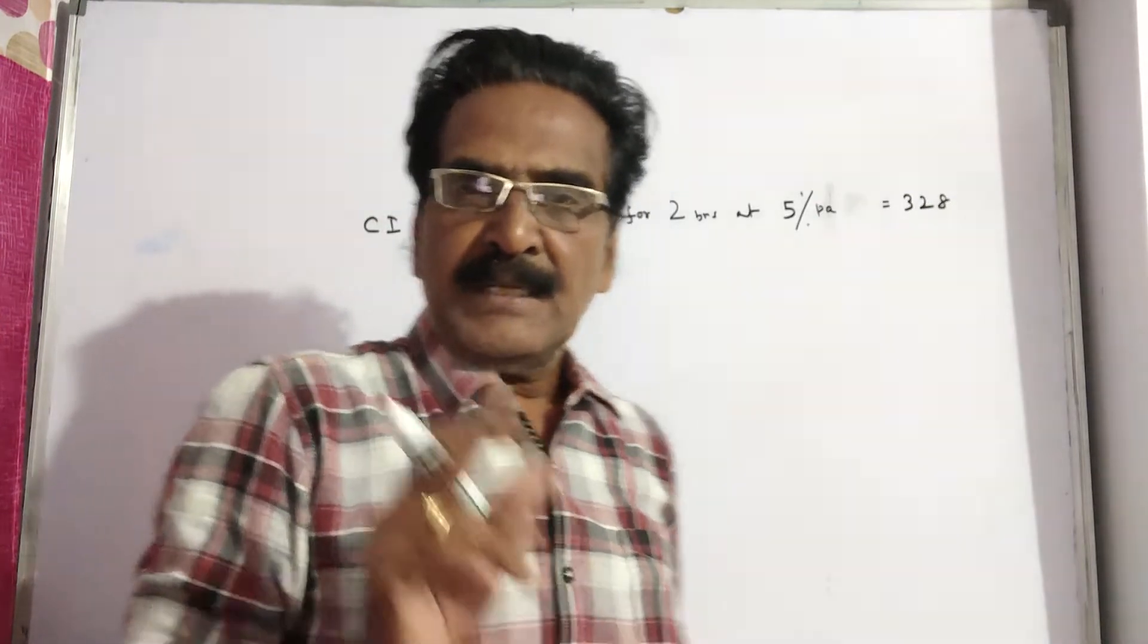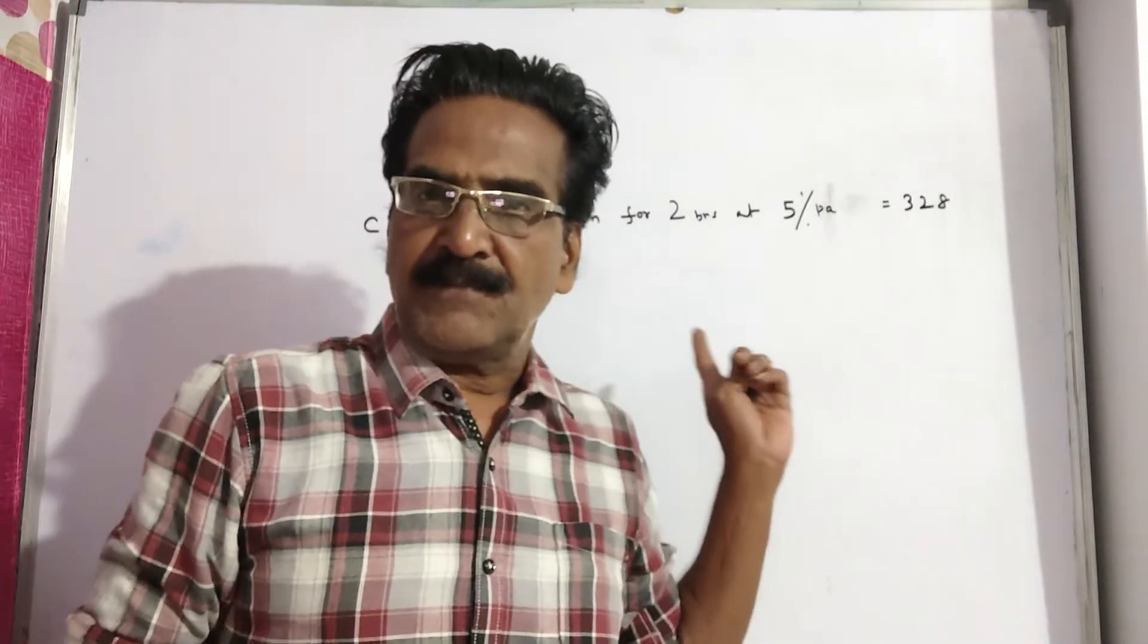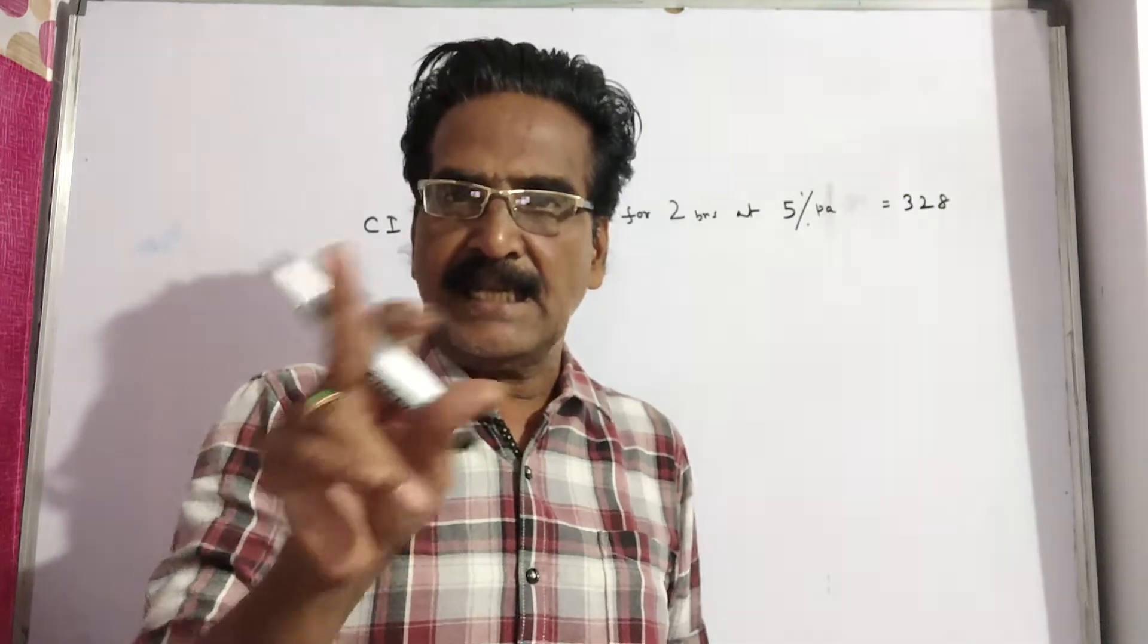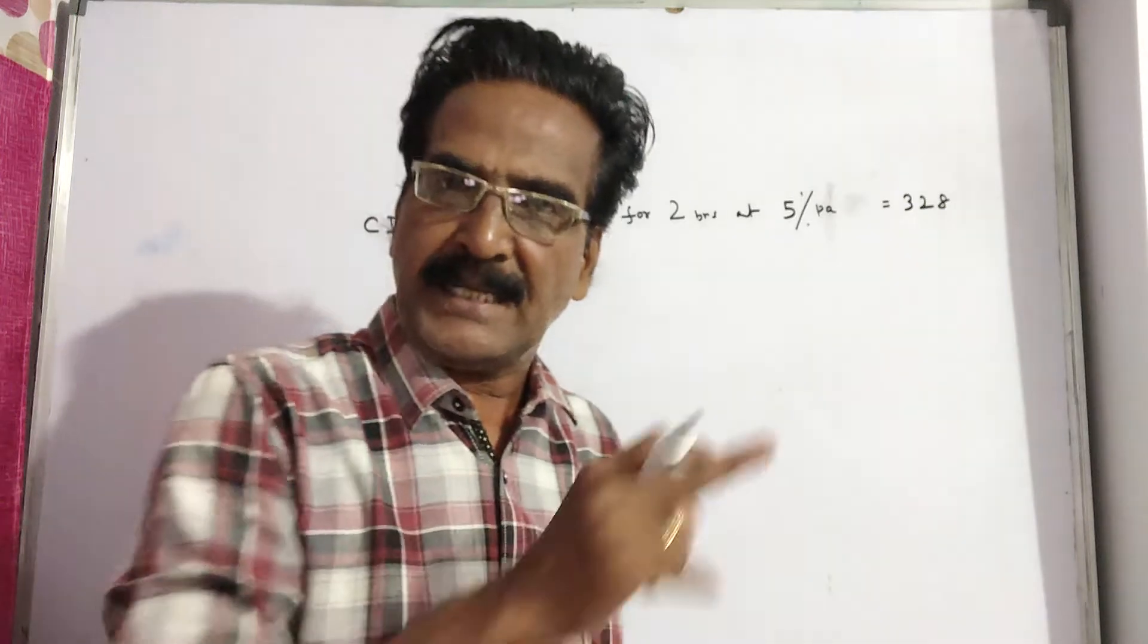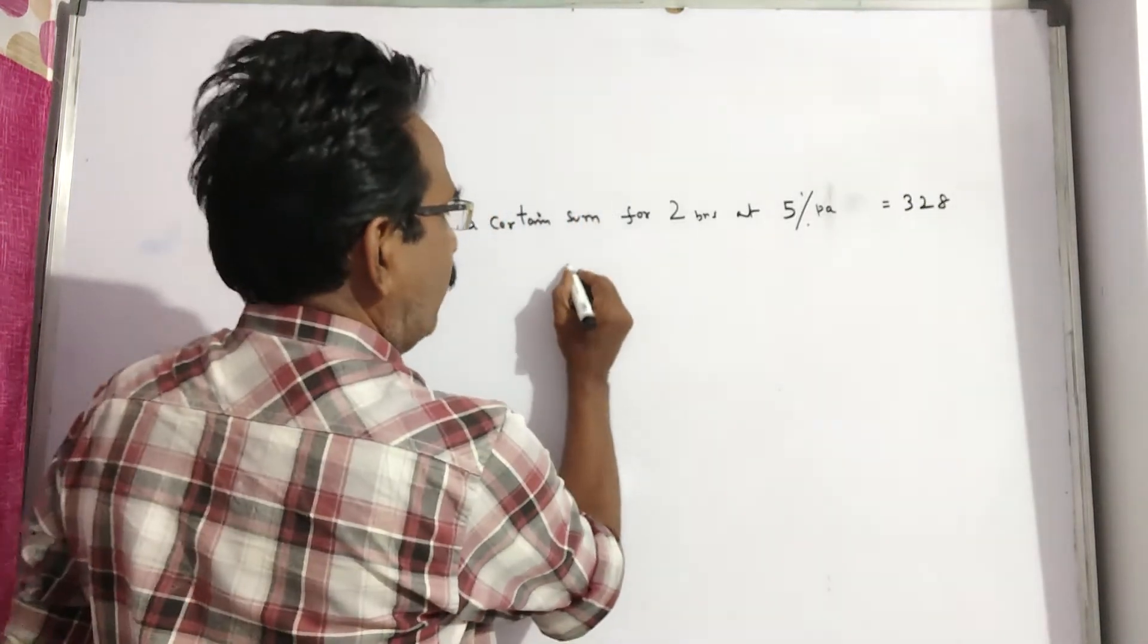See friends, if the time is 2 years, then the relation between compound interest and simple interest is given by this formula. What is that formula?